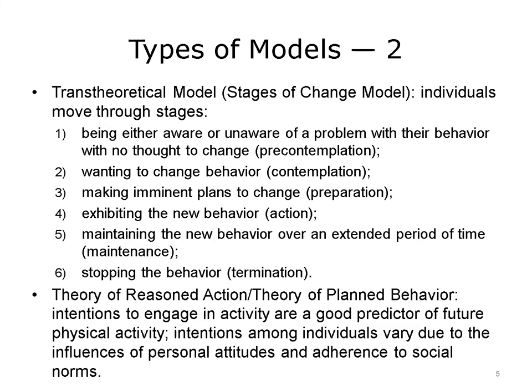A second model is the transtheoretical model, or the stages of change model. This describes how individuals move through six stages. The first stage is being aware of a problem. The second is wanting to change. Third comes planning to change, that is making preparations. The fourth stage is action, followed by the fifth stage, maintenance. The sixth stage is termination. If you think about this as your New Year's resolution, you might say it's December and you're in this pre-contemplation period.